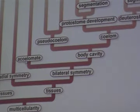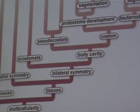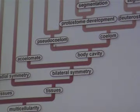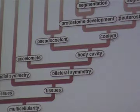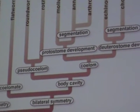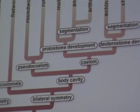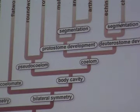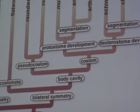Acoelomate refers to a body cavity — flatworms don't have any body cavity. Roundworms and rotifers have a sort of body cavity, which is the pseudocoelom. And everything else has a true body cavity — a coelomate. A body cavity is a space — a space for organs in the body. We're going to learn all about this as we go through.